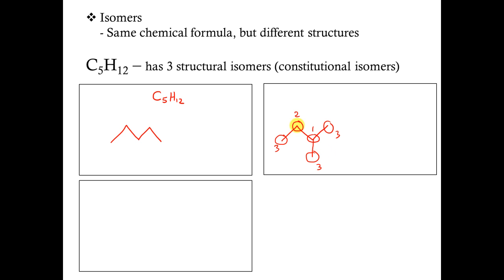Let's double check. Do we have five carbons? One, two, three, four, five — C5. Do we have 12 hydrogens? Three, six, nine, ten, eleven, twelve — yes. So there you have it: C5H12 as well. These two structures have the same chemical formula but different structures, and thus they are known as isomers of each other — specifically structural isomers or constitutional isomers.